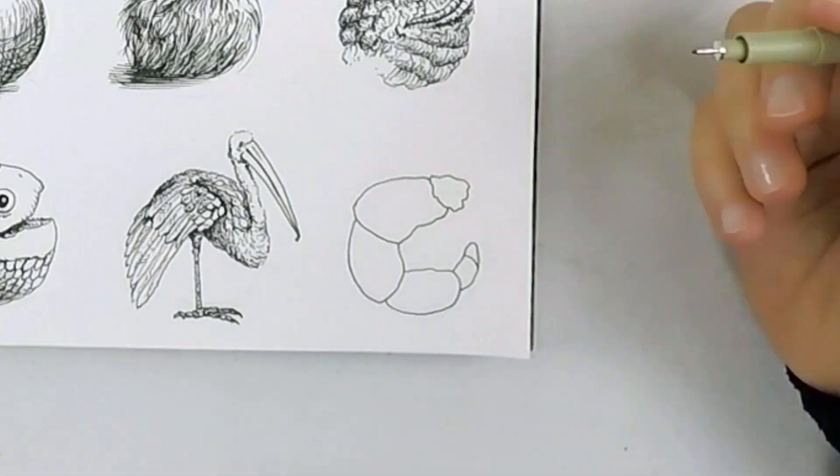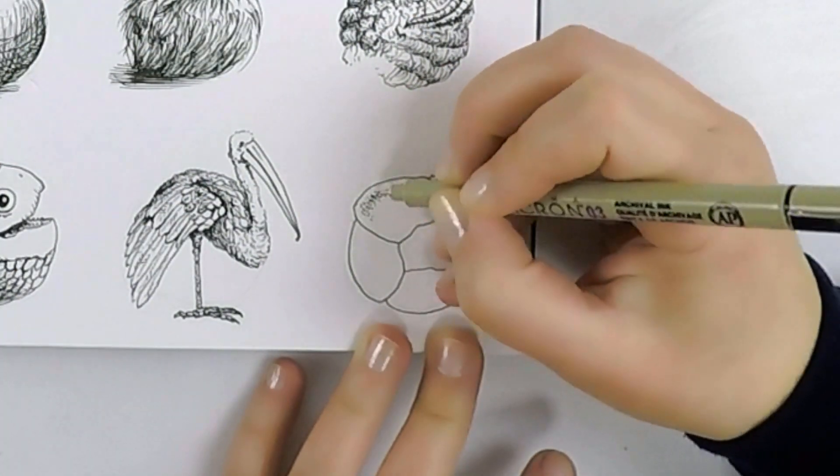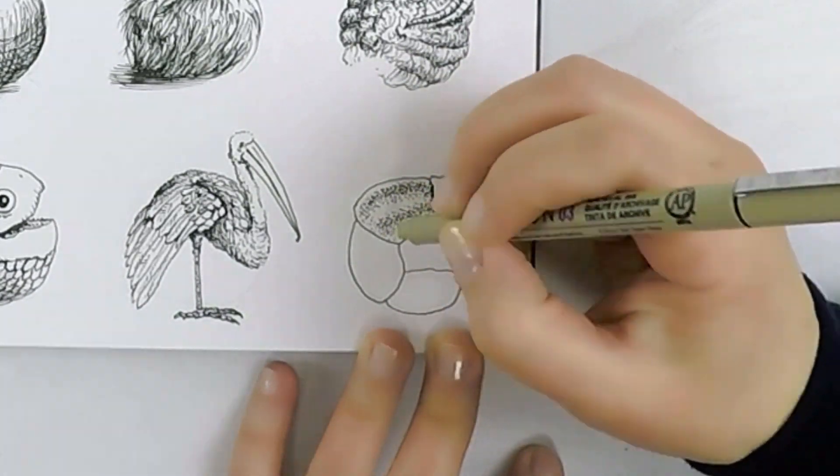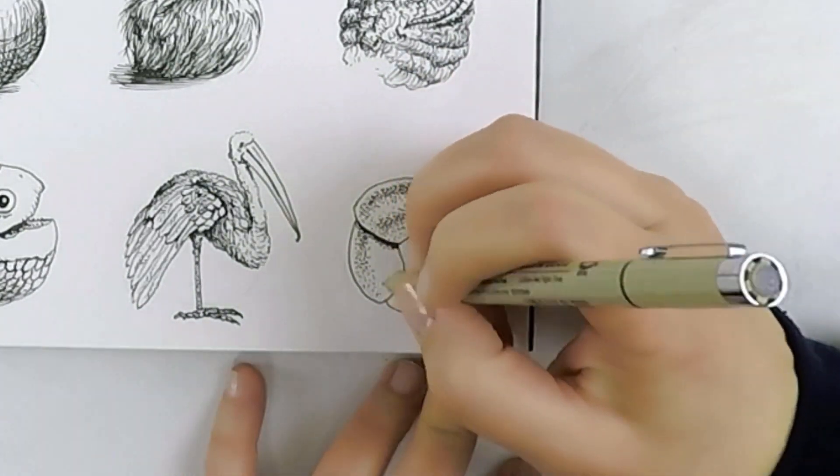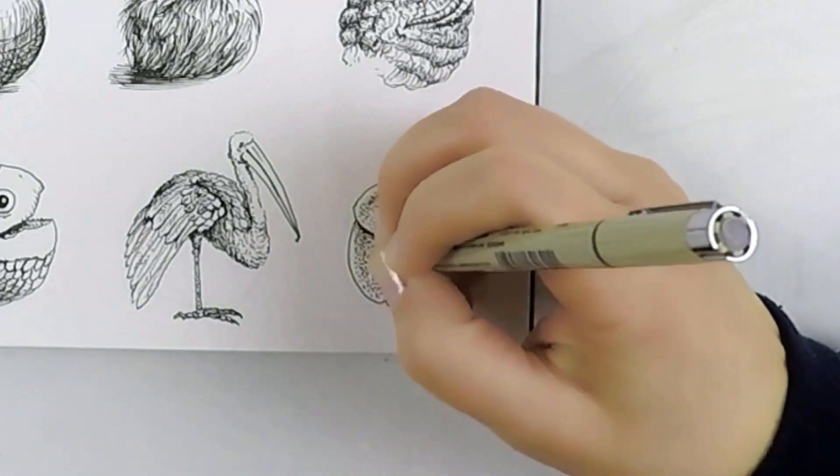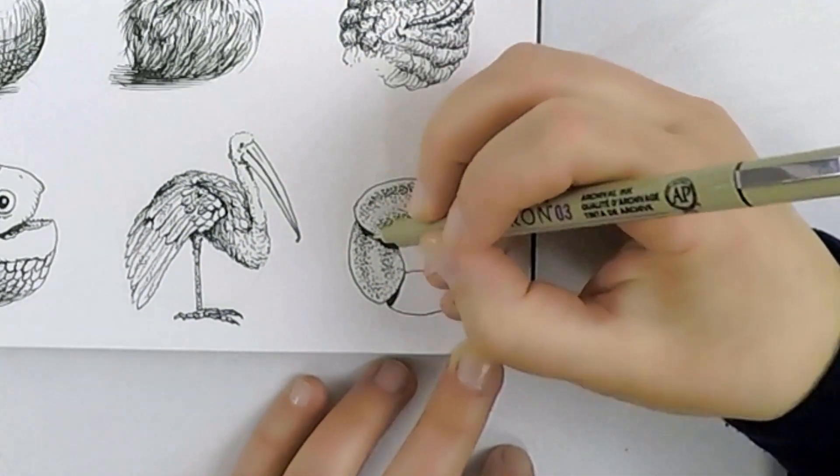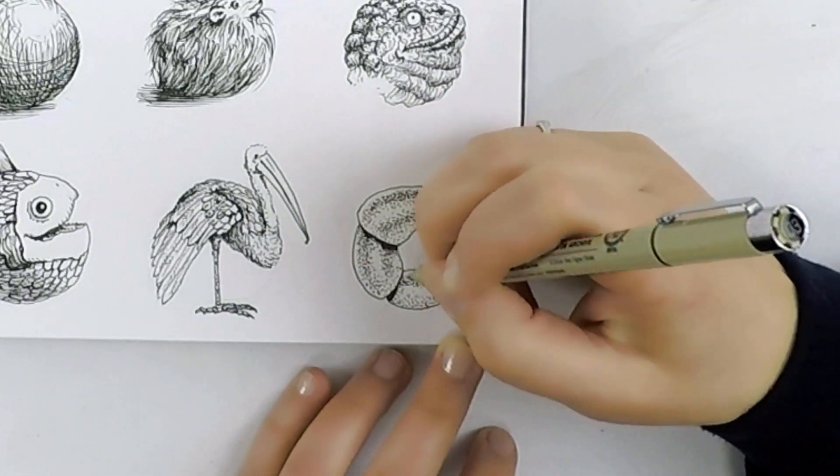For the last texture, find visual references of animals with exoskeletons like lobsters, crabs, and shrimp. Or you could look at insects like beetles, ants, or grasshoppers. The animal world has an endless amount of inspiring visual textures.